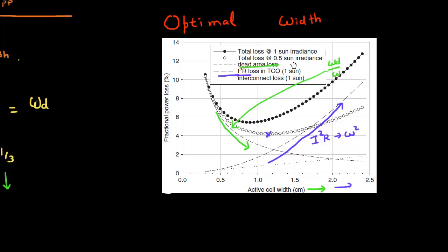The optimal width also depends on the intensity of incident light. If I have less intense light, I can use a larger cell with a larger width. If I increase the intensity of my light, I'll have more current, so the I²R loss term will increase, and I'll get a lesser value of the optimal width for my cell.